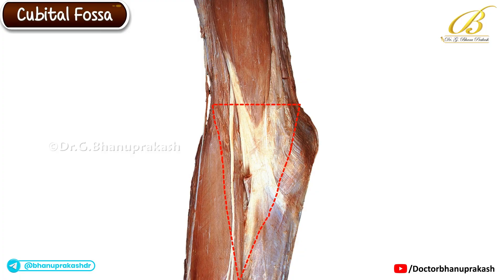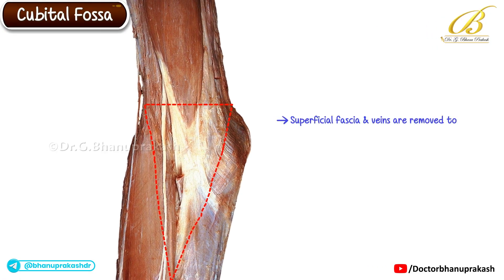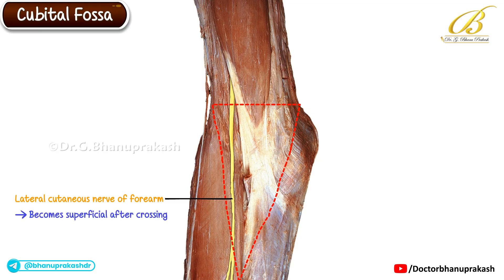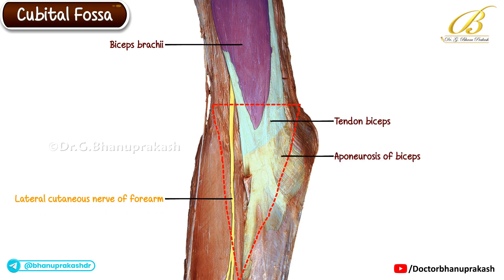Now this image shows the same specimen after the superficial fascia and veins have been removed to expose the deeper structures of the cubital fossa. Here we can clearly identify the lateral cutaneous nerve of the forearm, which becomes superficial after crossing over the biceps brachii muscle. The tendon and aponeurosis of the biceps are now distinctly visible. Notice how the bicipital aponeurosis blends seamlessly with the deep fascia of the forearm, reinforcing the roof of the cubital fossa and separating the superficial from the deep structures.